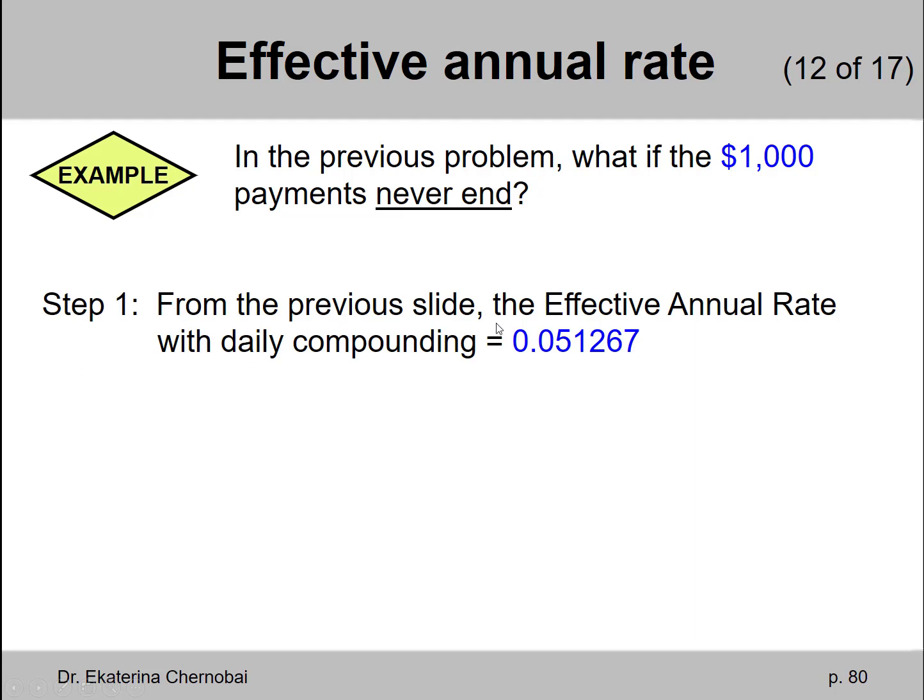Same first step. Find the effective annual rate with daily compounding. We already know that it's 5.1267% per year. And in the second step you use this as the discount rate to find the perpetuity present value.